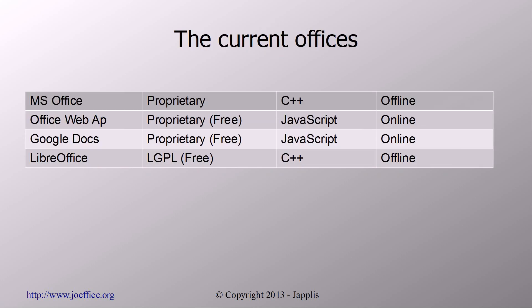So what is the current state of office suites? You have of course Microsoft Office, the most known office suite. Then Microsoft also wrote an online version of it. Then you have Google Docs, which is an online version of an office suite. And then you have LibreOffice, which is an open source variant of Microsoft Office, but it's quite comparable to Microsoft Office.